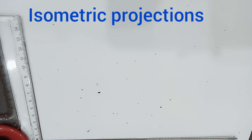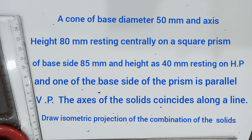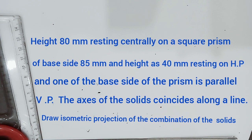Welcome to the discussion of isometric projections. Under this, we are discussing isometric projection of composite solids. The given problem: a cone of base diameter 50 mm and height 80 mm is resting centrally on a square prism of base side 85 mm and height 40 mm. The side of the base is parallel to VP. The axis of the solids coincides along a line. Draw the isometric projections of the combination.